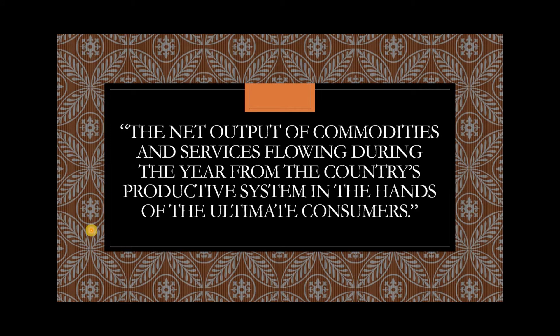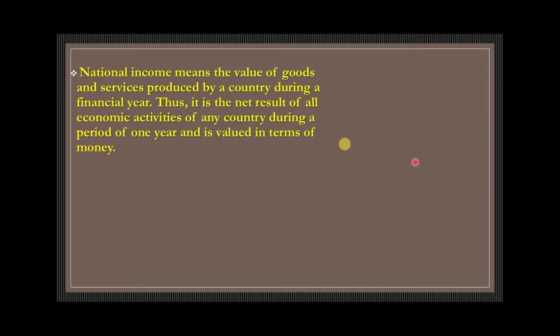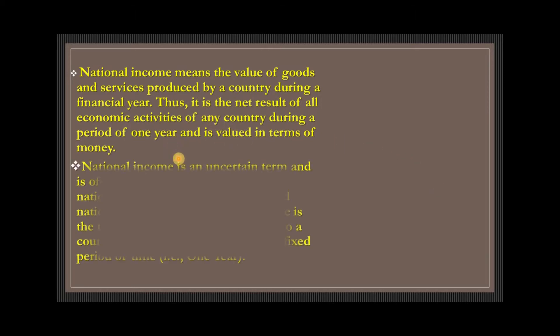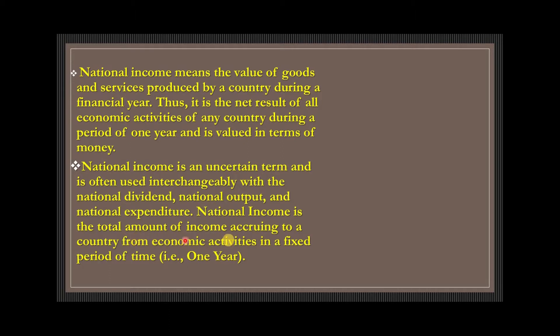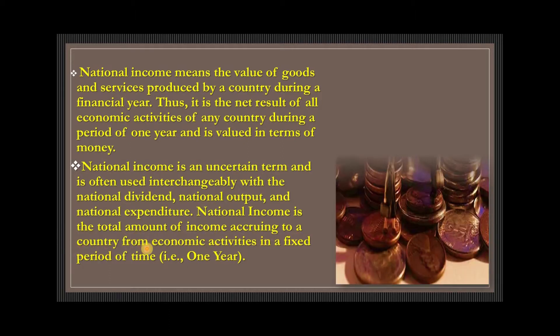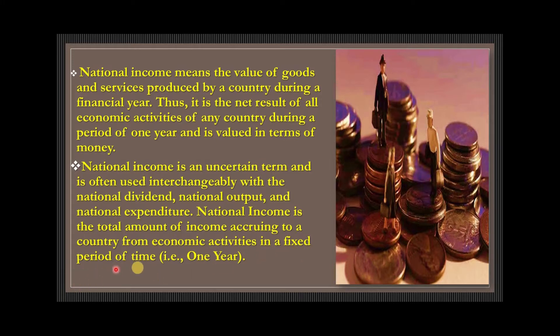According to Kuznets, national income is the net output of commodities and services flowing during the year from the countless productive systems into the hands of the ultimate consumers. In simple words, national income means the value of goods and services produced by a country during a year — the total amount of income accruing to a country from economic activities in a fixed period of time, such as one year.